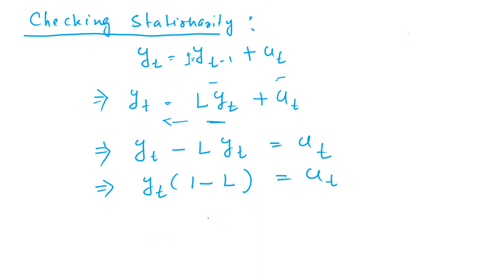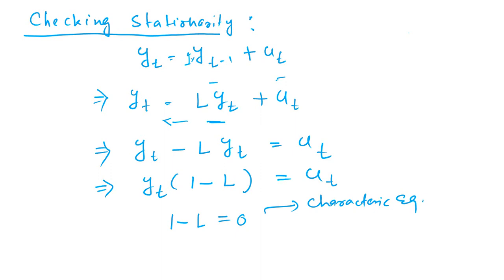Taking yt common from the left-hand side gives yt times (1 minus L) equal to ut. Now, the characteristic equation in this case is 1 minus L equals 0, which implies L equals 1.